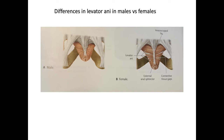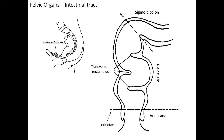There are some differences in the levator ani muscles found in males and females. Females have more connective tissue gaps in the levator ani muscles than men. Here we see again the puborectalis muscle pinching off the rectum. In the picture to the right, we see the internal structure of the rectum — the pelvic floor divides the rectum from the anus, and the rectum also has transverse rectal folds.